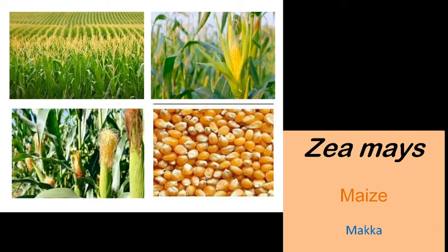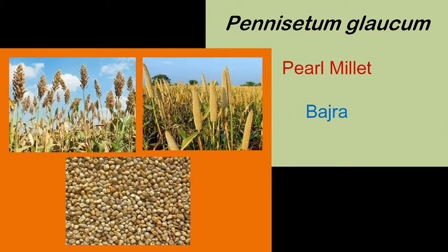The next plant is maize, Zea mays, which we are very familiar with. The next plant is bajra or pearl millet, known as Panicum glaucum. It is rich in magnesium, thus very good for the heart. Its high fiber content maintains cholesterol levels in the blood, high antioxidant compounds help the body fight infection, and its high iron content prevents anemia.